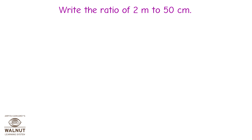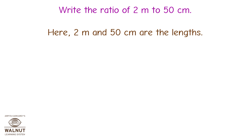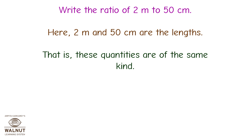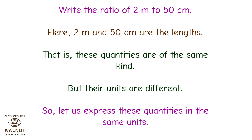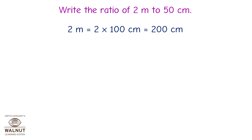Write the ratio of 2 meters to 50 centimeters. Here, 2 meters and 50 centimeters are the lengths — these quantities are of the same kind, but their units are different. So let us express these quantities in the same units. We convert 2 meters into centimeters: 2 meters is equal to 2 into 100 centimeters, that is equal to 200 centimeters.